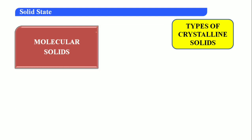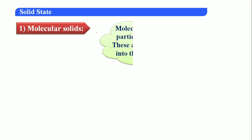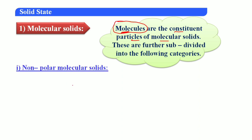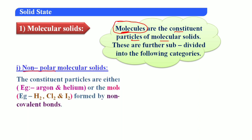First, molecular solids: molecules are the constituent particles of molecular solids — this is a one-mark question they can ask. Molecular solids are further subdivided into: first, non-polar molecular solids — as the name indicates, they are non-polar. Examples include argon, helium, S₂, Cl₂, I₂ — all in solid form. These constituent particles are either atoms or molecules which are non-polar, with no charge separation.